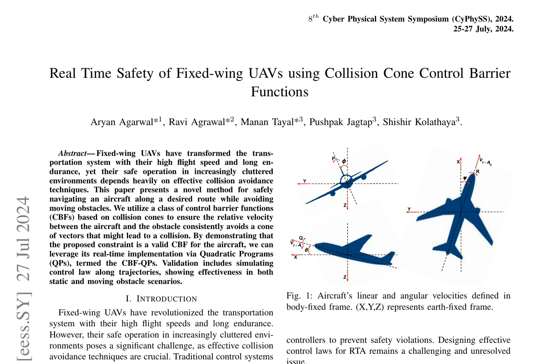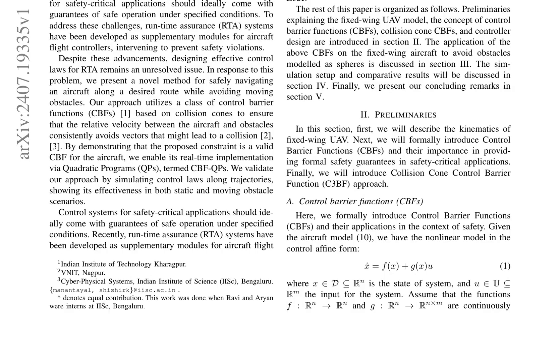This paper proposes a novel approach to ensure real-time safety of fixed-wing UAVs using collision cone control barrier functions (CBFs). CBFs provide formal safety guarantees in safety-critical applications by ensuring the relative velocity between the aircraft and obstacles consistently avoids vectors that might lead to a collision. The authors introduce the collision cone control barrier function (C3BF) approach, which utilizes collision cones to ensure safe operation.